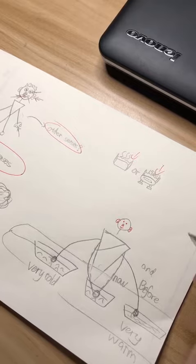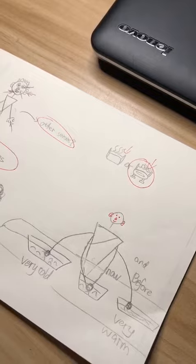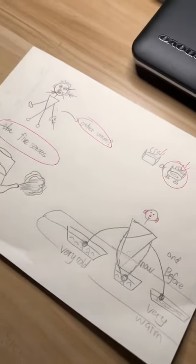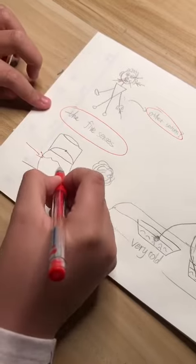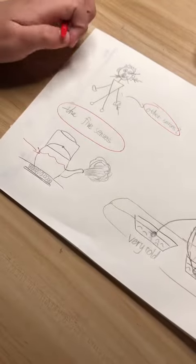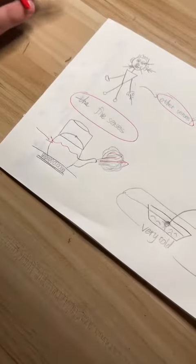Here is some water with ice in it. It is very cold. Here is some water in the kettle. And the water is boiling. Steam is coming out of the kettle.